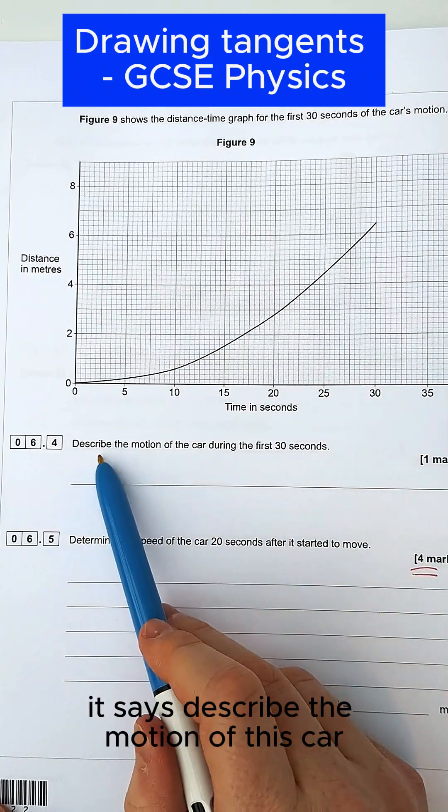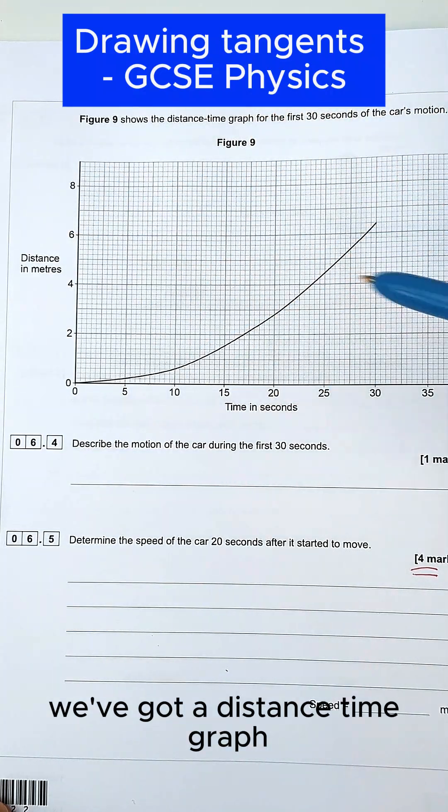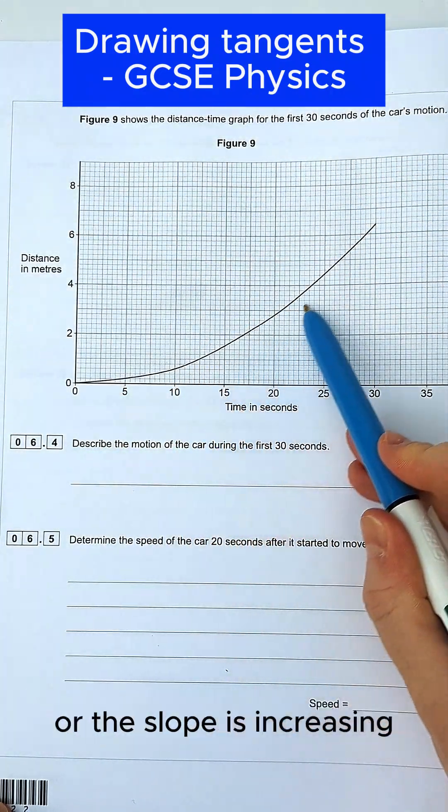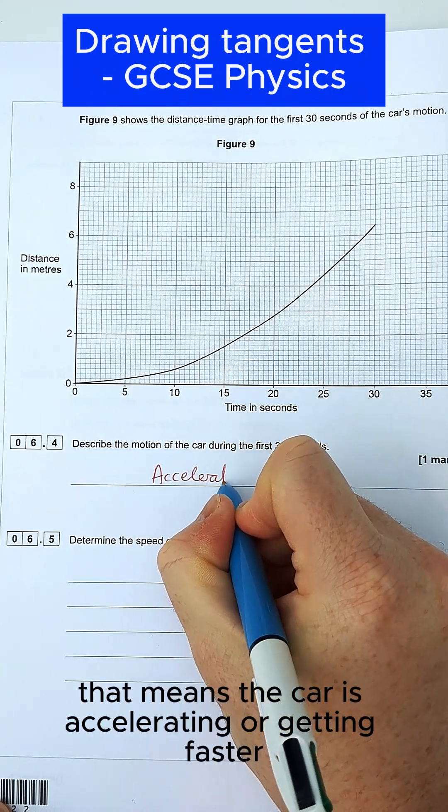So let's have a look at the initial question. It says describe the motion of this car during the first 30 seconds. We've got a distance-time graph. Hopefully we can see the gradient is increasing or the slope is increasing, so that means the car is accelerating or getting faster.